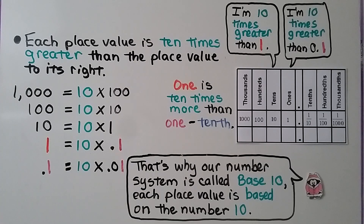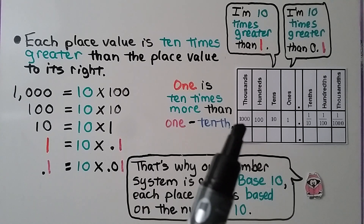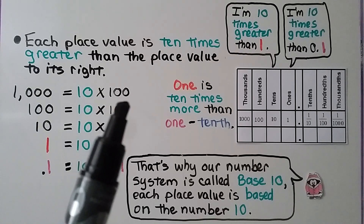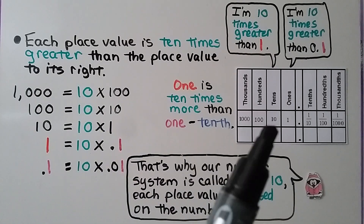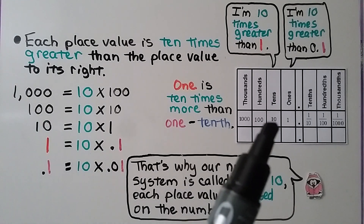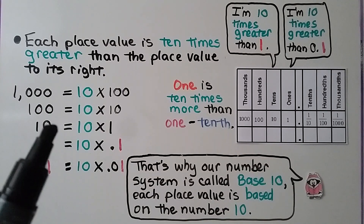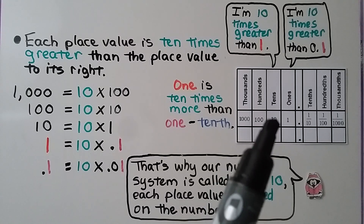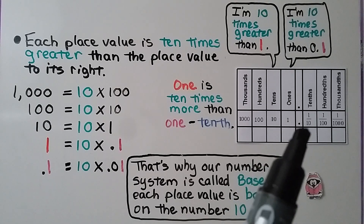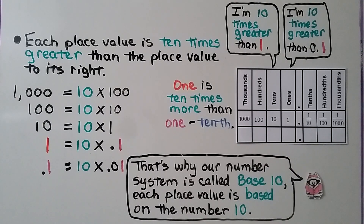Each place value is ten times greater than the place value to its right. A thousand is ten times greater than a hundred; a hundred is ten times greater than ten; ten is ten times greater than one; and one is ten times greater than one-tenth. That's why our number system is called base ten — each place value is based on the number ten.